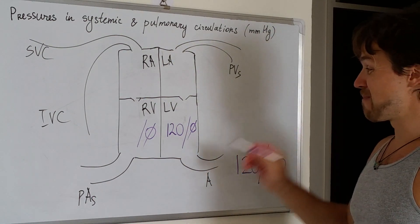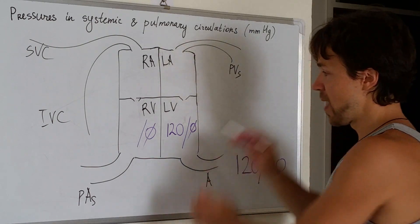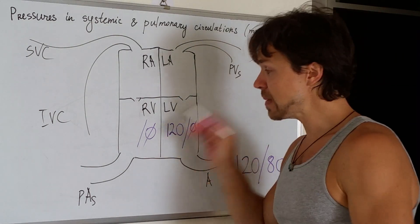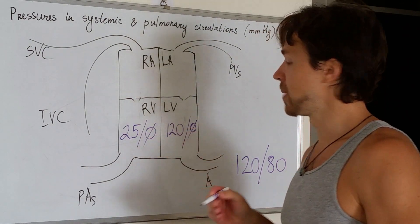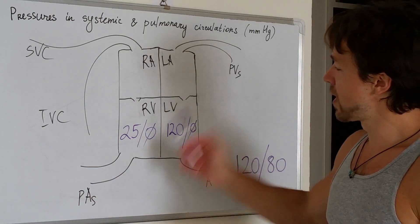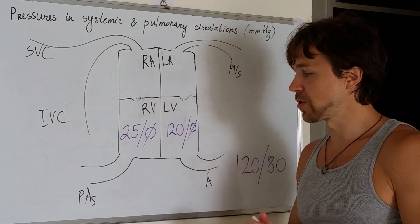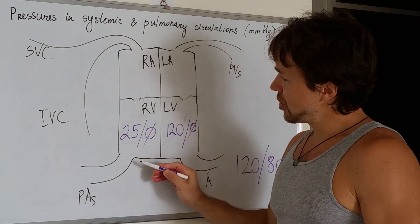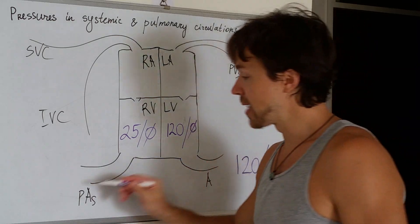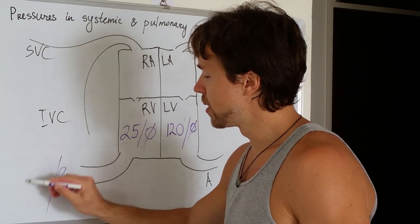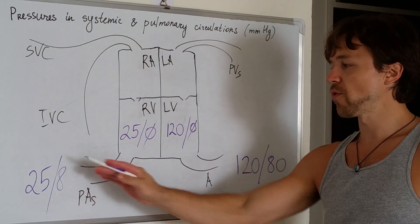The pressure created by the right ventricle is significantly lower than the pressure created by the left ventricle, because the right ventricle doesn't have to overcome that same resistance. That pressure is 25 millimeters of mercury, so the pressure in the right ventricle is 25 over zero. The pressure in the pulmonary circuit has an additional number — the diastolic value is 8 millimeters of mercury — therefore the pressure in the pulmonary circulation is 25 over 8.